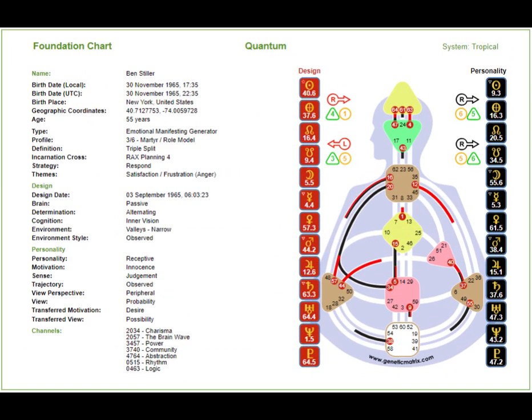We're moving from where we left off in the last video where we talked about definition and the triple split. In terms of this particular design, we're moving down and you'll see that we've separated the design - the unconscious data from the personality or conscious data. The design date is always in UTC universal coordinated time format, representing that 88 degrees of the Sun before birth, which is critical in terms of the human design calculation.